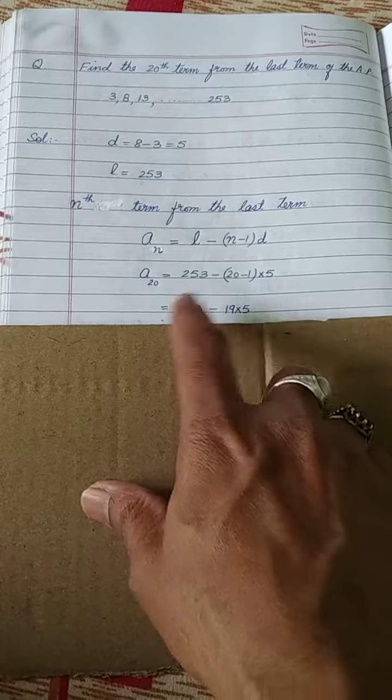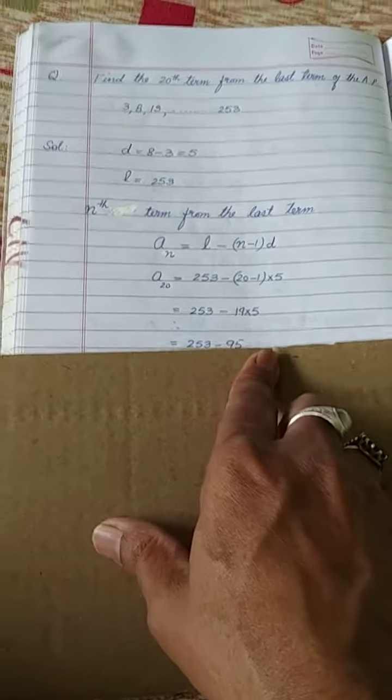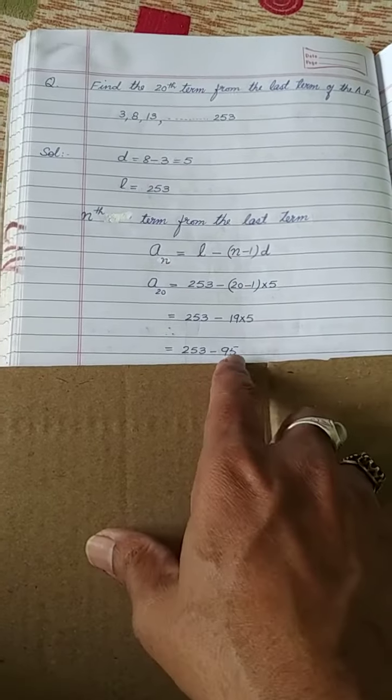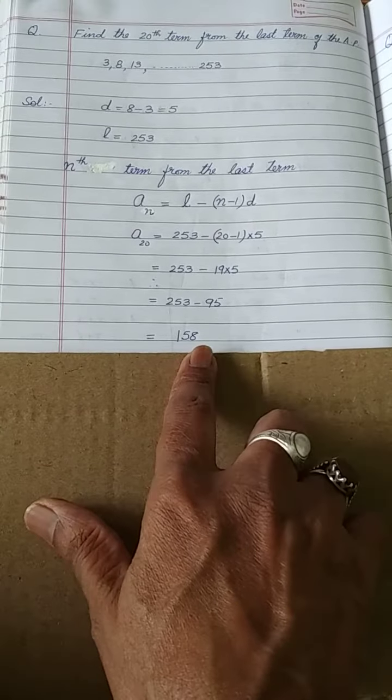When you calculate it, 253 as it is, 20 minus 1 is equal to 19 into 5. So it will be 19 into 5 will be 95. When you subtract, you will get 158. So that is the answer.